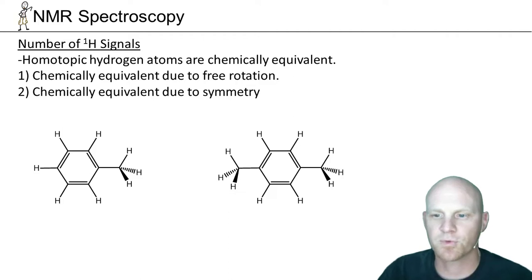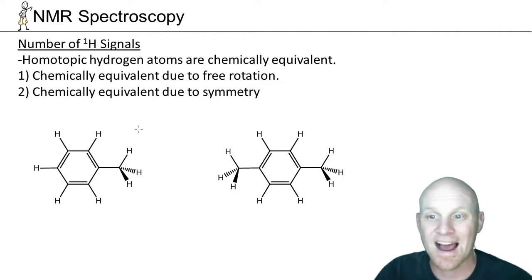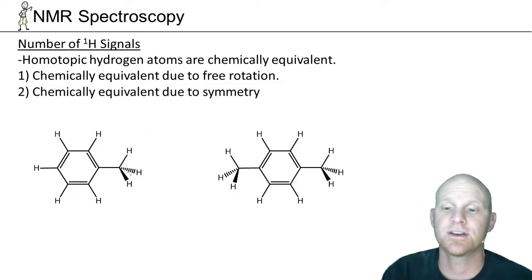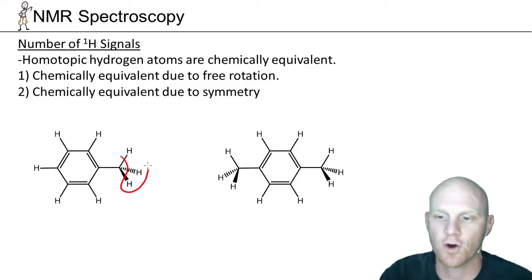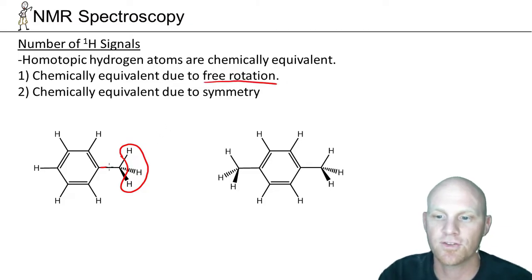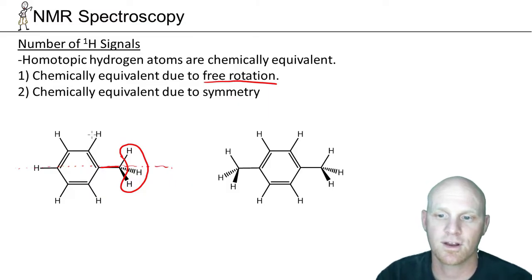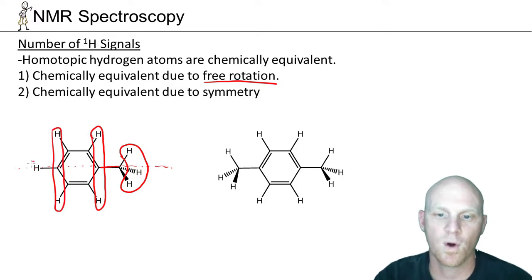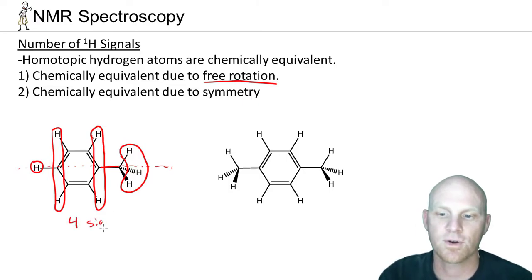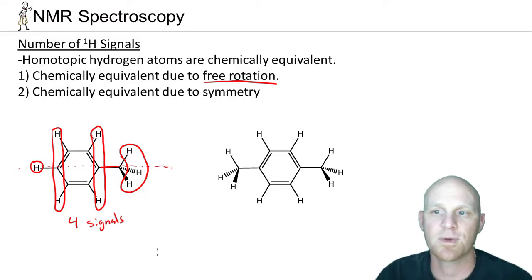Now let's look at a couple more examples where we've already numbered the carbons. Again, I recommend drawing all the hydrogens in. These three hydrogens are homotopic and chemically equivalent due to free rotation — this single bond is not part of a ring and is free to rotate. We also have symmetry cutting right across the horizontal plane, making the top of the molecule the same as the bottom. That gives us two pairs of equivalent hydrogens, plus one remaining hydrogen in its own environment — so there are four environments and therefore four signals in the H NMR spectrum.